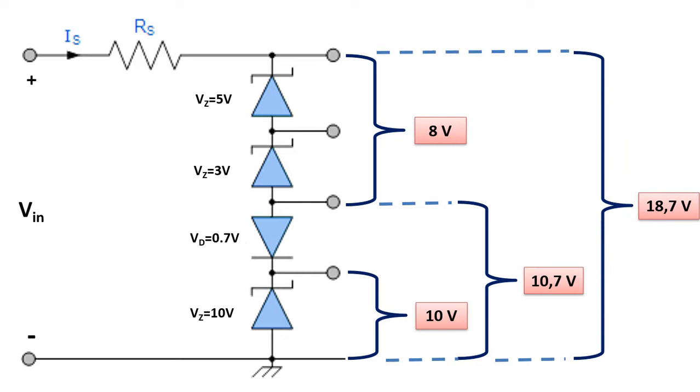Finally, if we take output from all of them, we can get 18.7 volts output value from the sum of 5 volts plus 3 volts plus 0.7 volts plus 10 volts. As you can see, we can get the voltages we want thanks to the Zener diodes. With this logic, adjustable voltage sources are made.